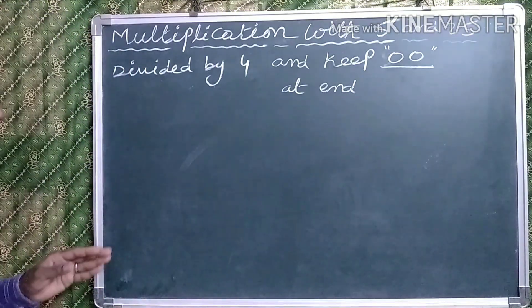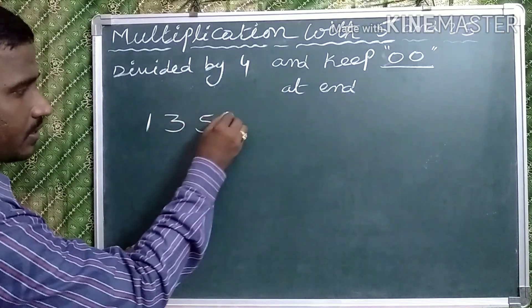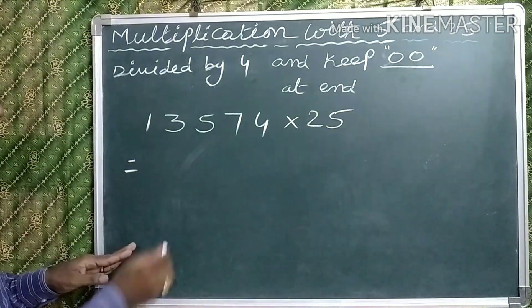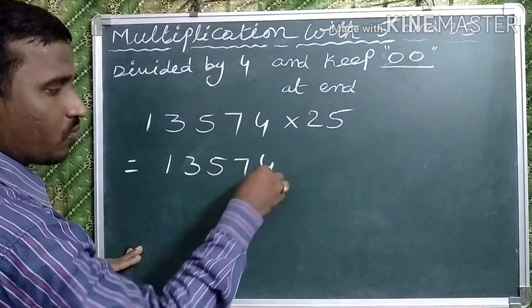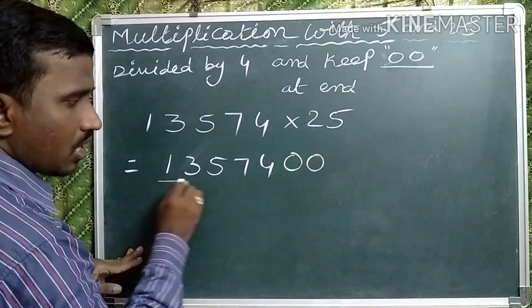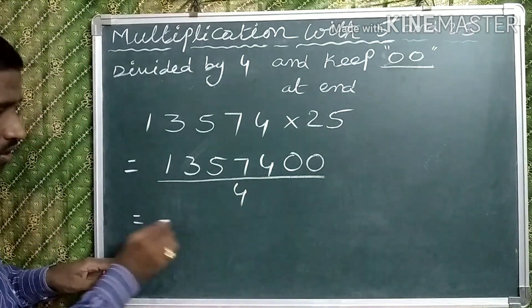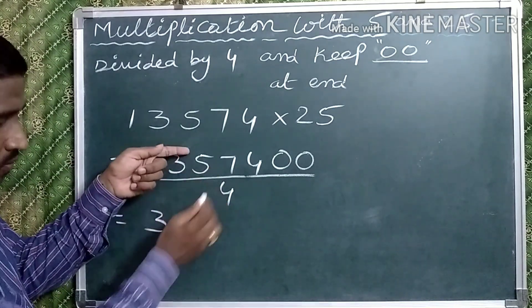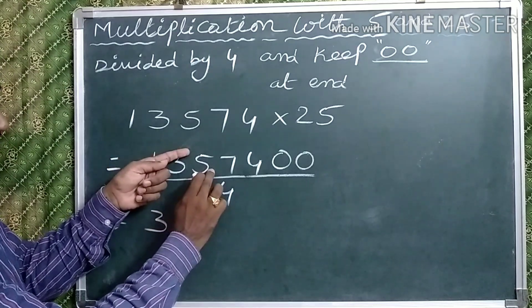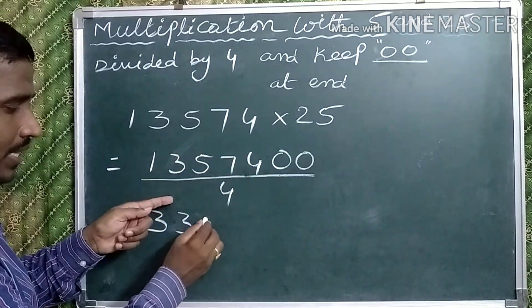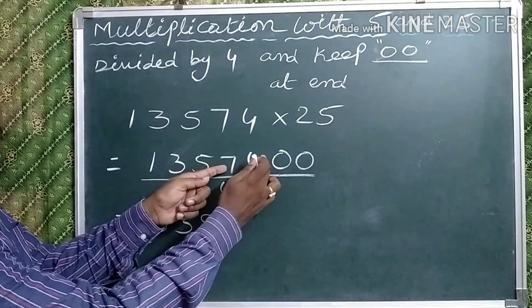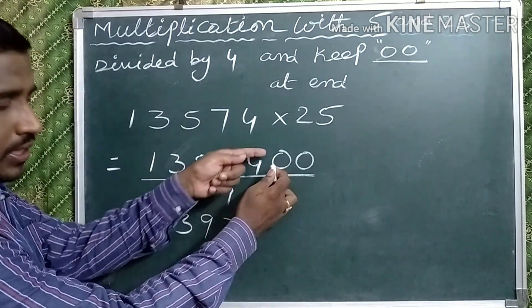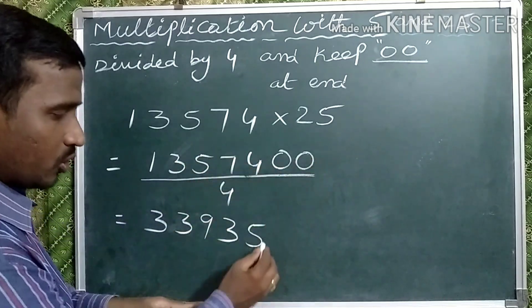Observe one more example: 13574 multiplied by 25. Keep 2 zeros at the end and divide by 4. 4 threes are 12; here one remainder — 1, 5 gives 15; 4 threes are 12; carry 3, then 37; 4 nines are 36; carry 1, then 14; 4 threes are 12; remainder 2, then 20; 5 fours are 20. Last 0. Answer: 339350.